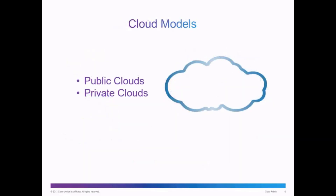There are two basic types of clouds: public clouds and private clouds. Public clouds offer services and applications to the general population, whereas private clouds are intended for specific organizations or entities such as governments, and are only accessed by those private organizations.